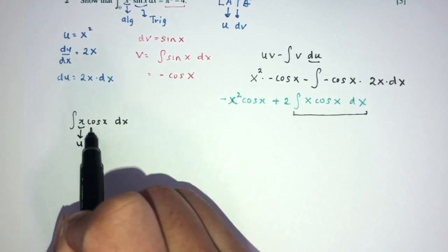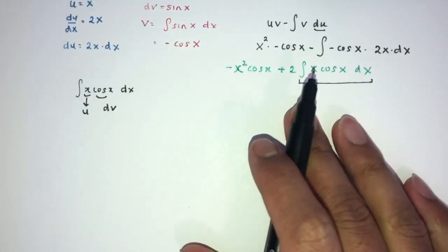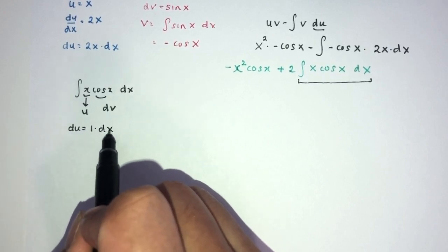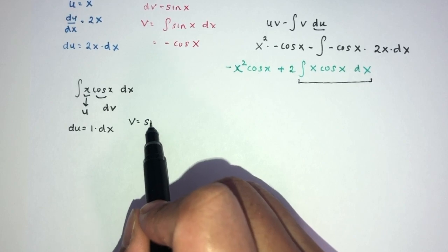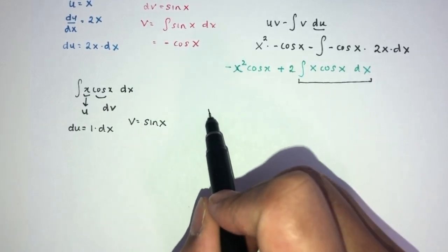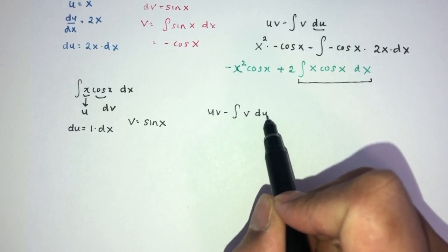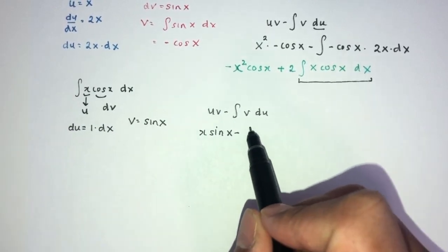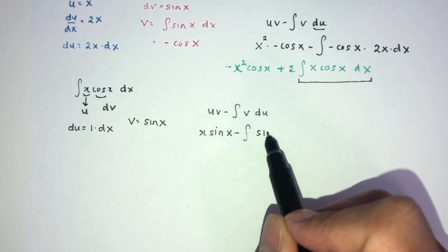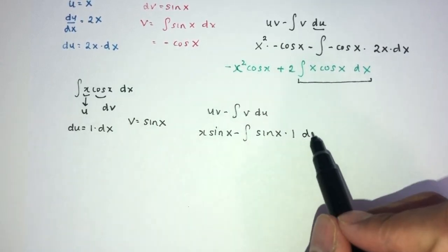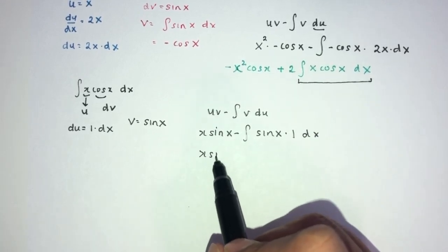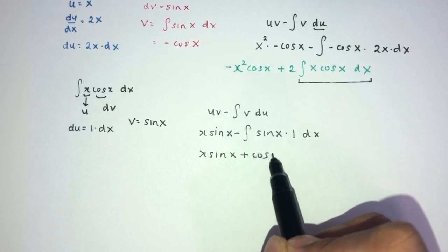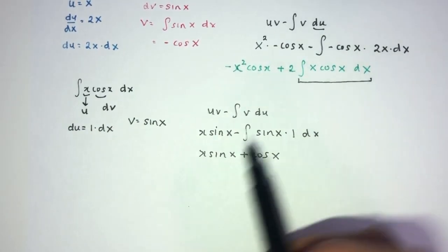So again, this is the first part and this is the second part. For the integral of x cos x dx: this will be my u, this will be my dv. So u equals x, du equals 1 dx. V will be the integral of cos x, which is sin x. So applying uv minus the integral of v du: u is x, v is sin x, minus v is sin x, du is just 1, giving dx. That gives x sin x, and here minus cos becomes plus cos x.